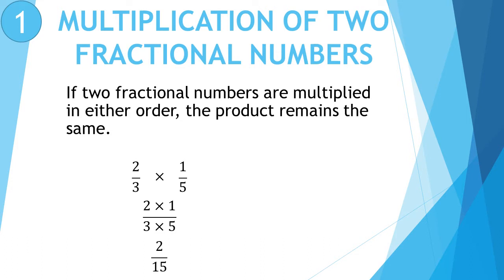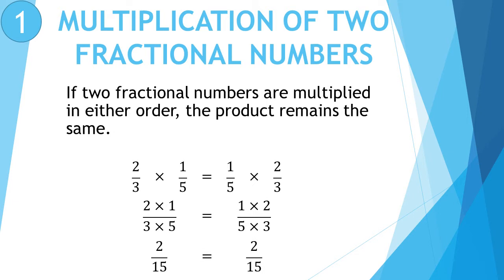Let us interchange the place of fractional numbers: 1 upon 5 multiply 2 upon 3. Again, multiply numerator by numerator and denominator by denominator. 1 2s are 2 and 5 3s are 15, so the fraction is 2 upon 15. So what you observed? We observed that the product in both cases is the same. Means, 2 upon 3 multiply 1 upon 5 is equal to 1 upon 5 multiply 2 upon 3.